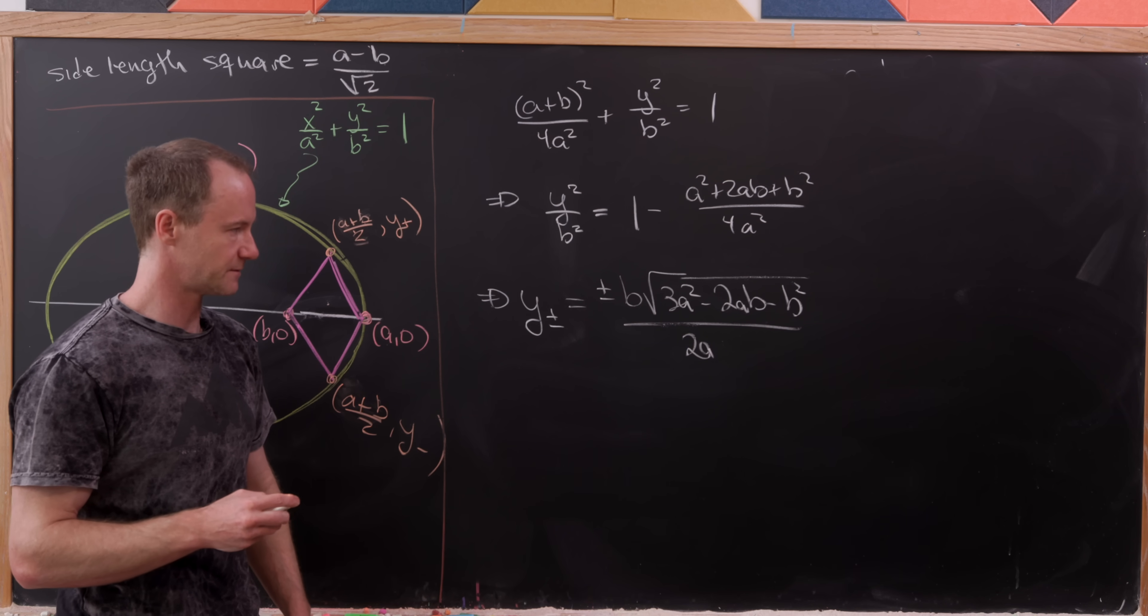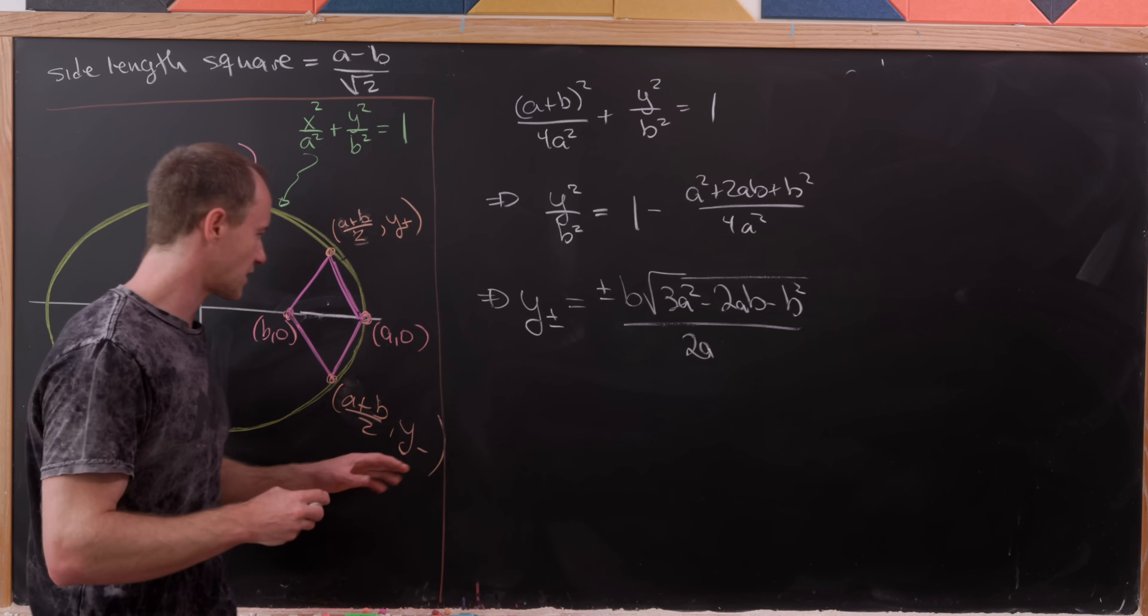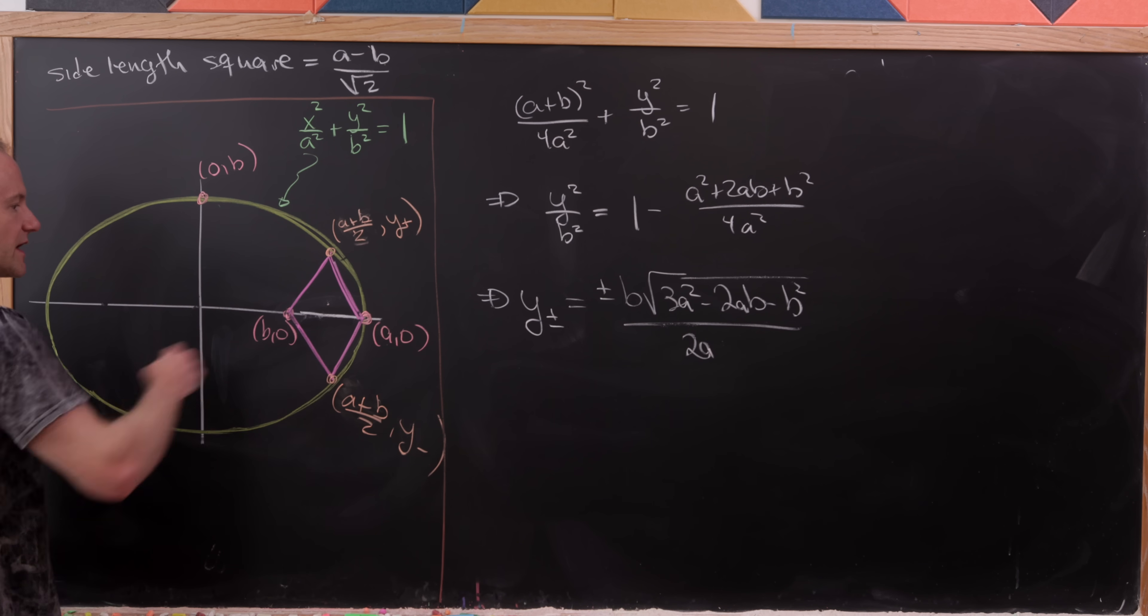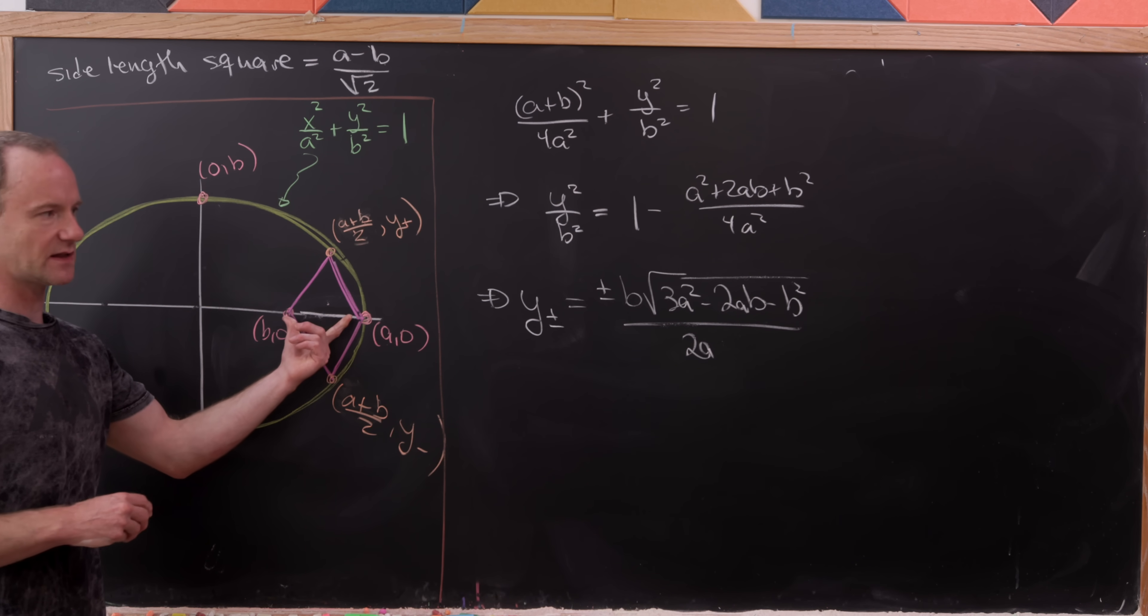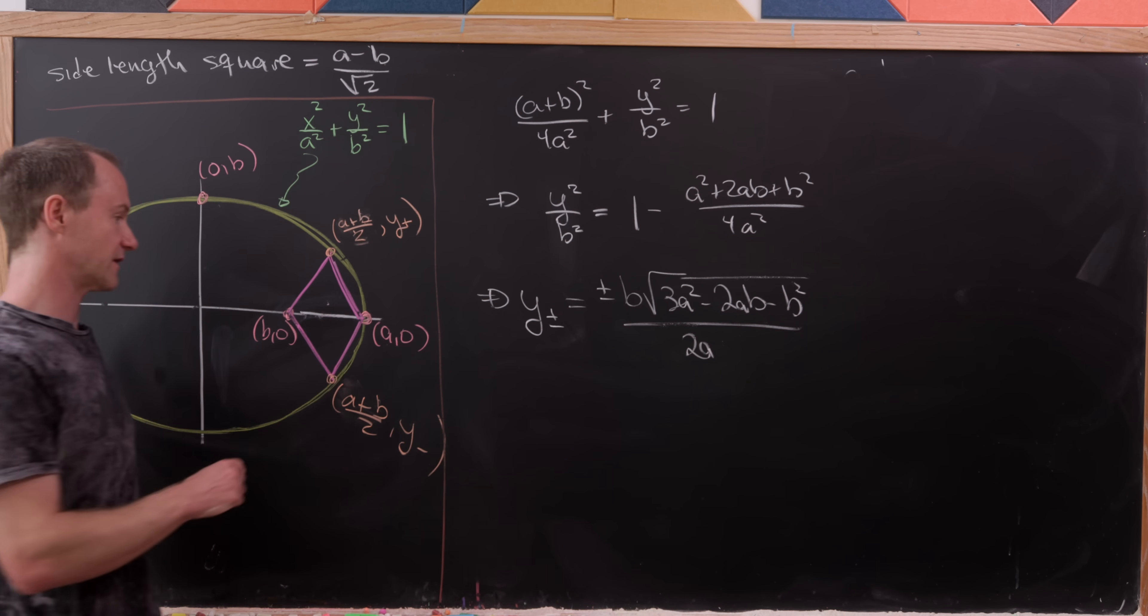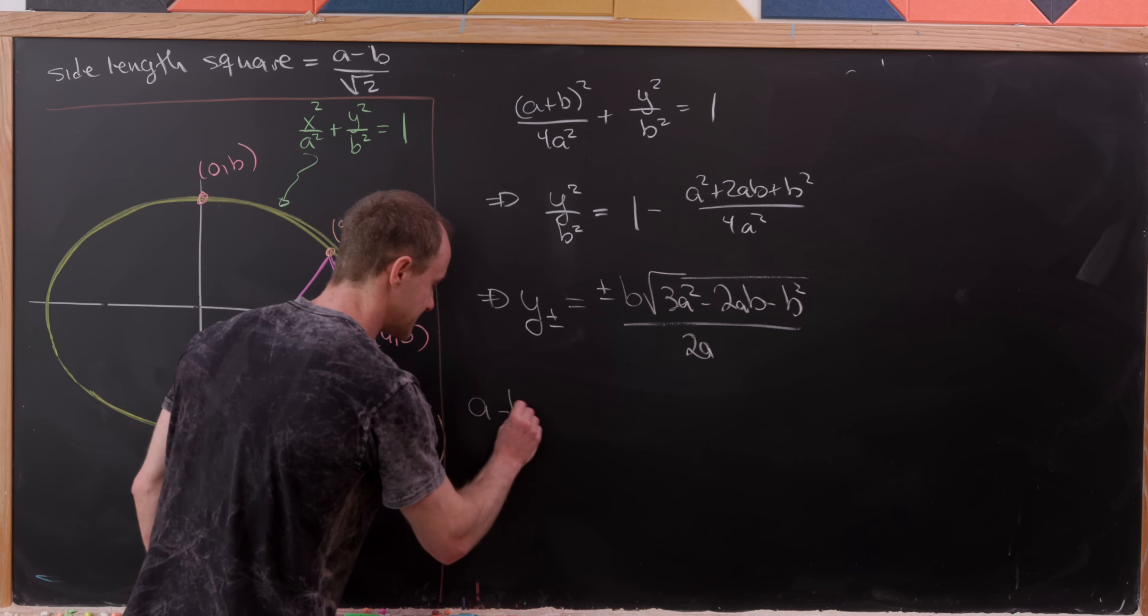Now I'd like to observe that we have a square over here only when the two diagonals have the same length. But notice this horizontal diagonal has a length that's pretty easy to calculate. That's simply a minus b.